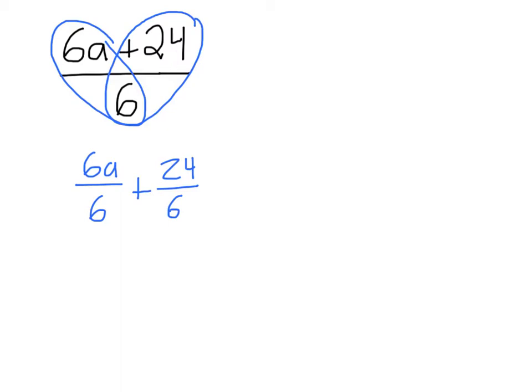6a over 6 simplifies to a, and 24 over 6 simplifies to 4. So this whole expression becomes a plus 4, and it's in the correct order, so this is simplified.